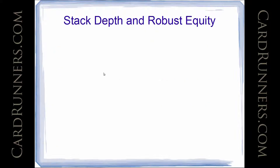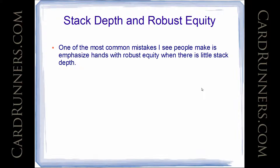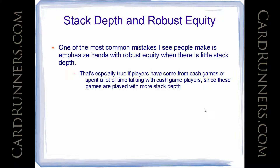One of the most common mistakes I see people make is emphasize hands with robust equity when there is little stack depth. That's especially true if players have come from cash games or spent a lot of time talking with cash game players, since these games are played with more stack depth. When you're playing cash games, almost everyone is used to playing 100 big blinds deep. When you're playing tournaments, very rarely are you 100 big blinds or deeper — you're almost always significantly more shallow than that. Additionally, hands with robust equity are usually easier to play, so there's a bias for them even in cash games.